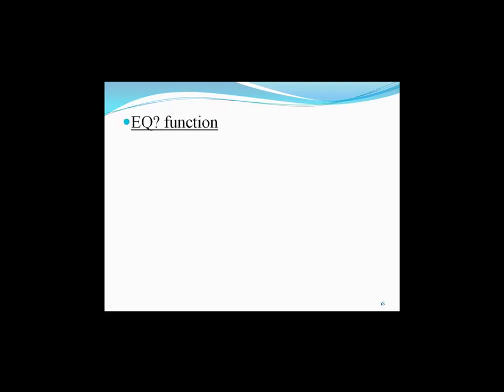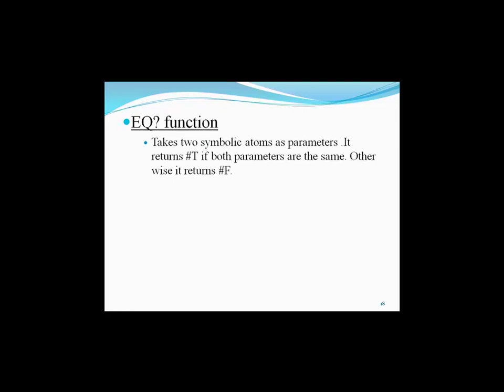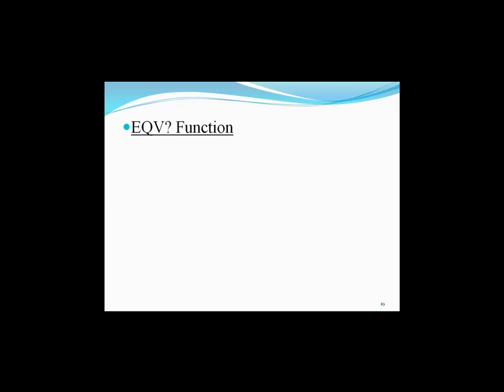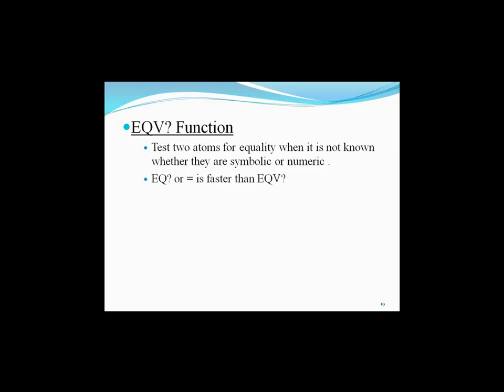The eq? function takes two symbolic atoms as parameters and returns true if both parameters are the same, otherwise false. For example, (eq? 'a 'a) returns true since both atoms are the same. (eq? 'a 'b) returns false since a and b are different atoms. (eq? 'a '(a b)) returns false. Now, we will be moving to the equal? function, which tests two atoms for equality when it is not known whether they are symbolic or numeric. equal? is faster than eq? for certain cases.